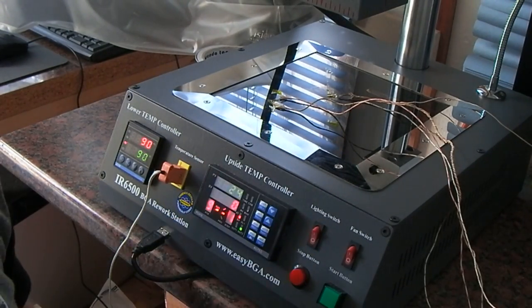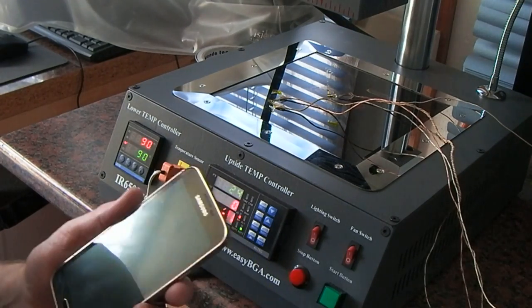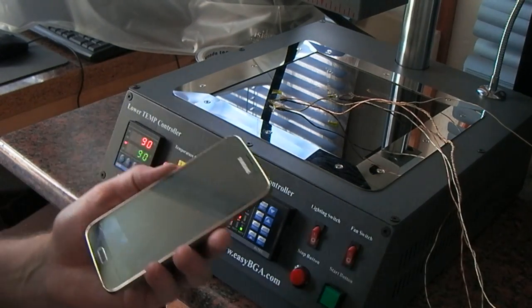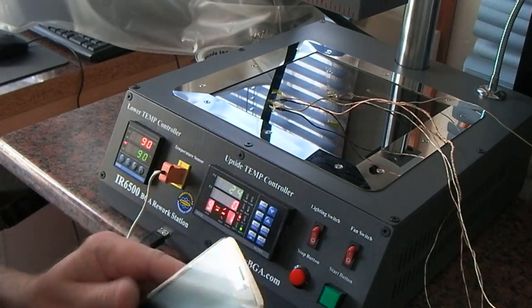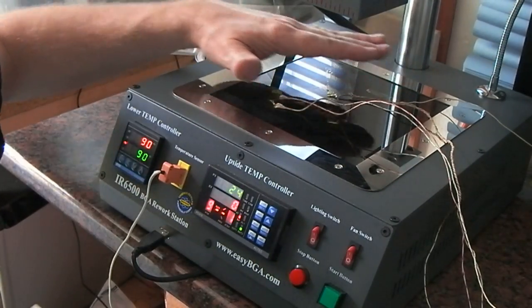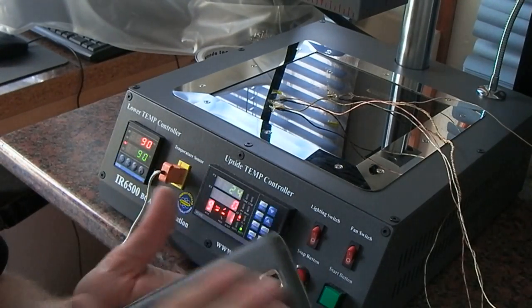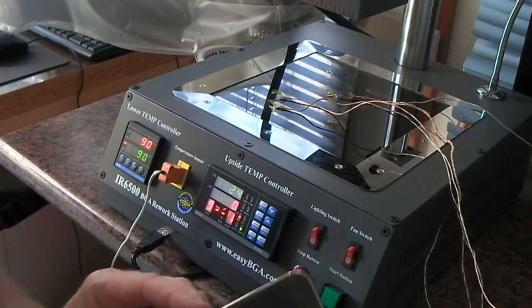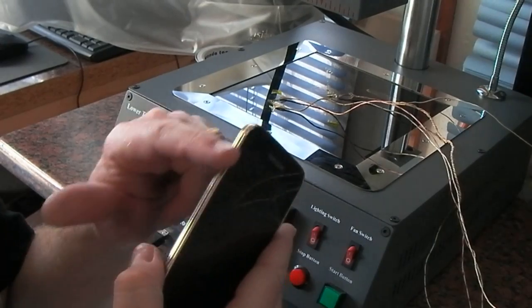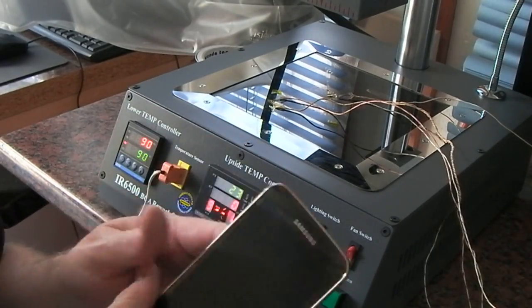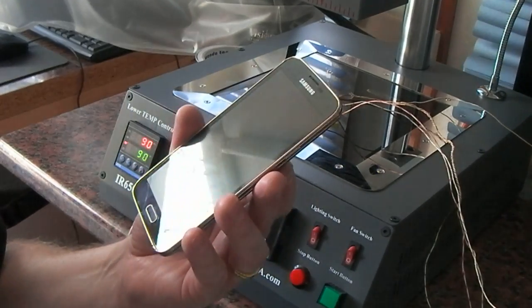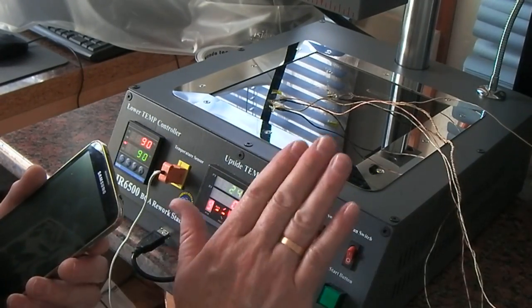Then I thought, hang on a second, we've got a BGA rework station here that's brand new, not been used very much. I wonder if I can use the preheater to get the phone up to 90 degrees, obviously once the battery and everything's dismantled.